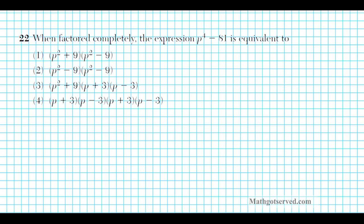Let's take a look at number 22. It reads: when factored completely, the expression p to the fourth minus 81 is equivalent to. In this problem, your ability to apply the difference of squares factorization algorithm is being assessed. If you have a squared minus b squared — called difference of squares — the factored form is a plus b times a minus b.